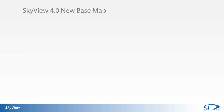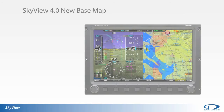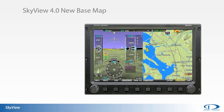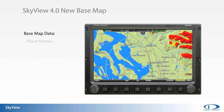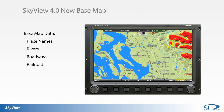The new base map incorporated with SkyView 4.0 firmware includes place names from small towns to large cities. Rivers are now depicted on the moving map display. Two types of roadways — primary roads and motorways — as well as railroads are also now depicted on the new base map. Base map databases are available in regionalized formats similar to SkyView's high-resolution terrain files.